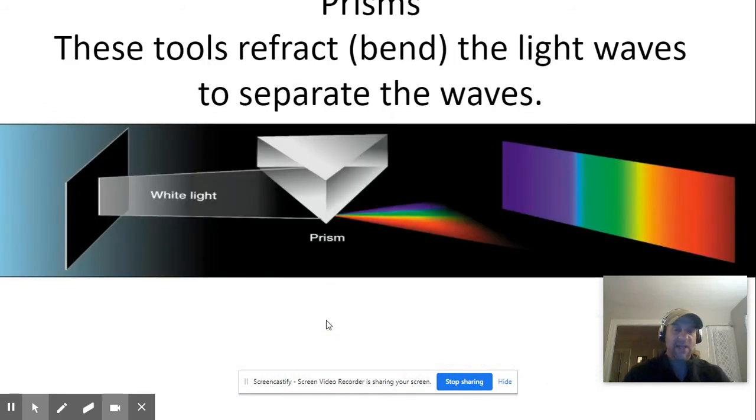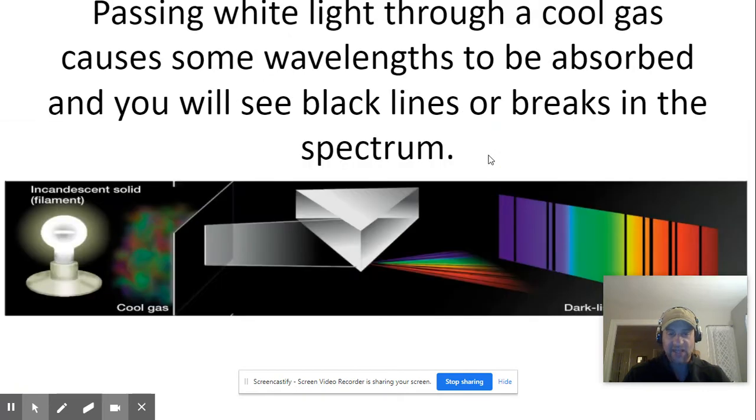When we take white light and pass it through a prism, we can separate that light into different wavelengths: red, orange, yellow, green, blue, violet. And if we have an incandescent light bulb, we would get a continuous spectrum.